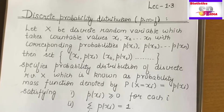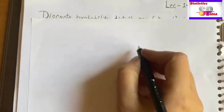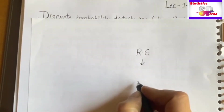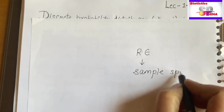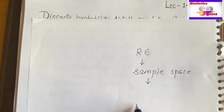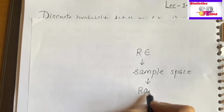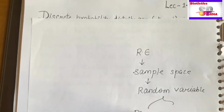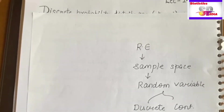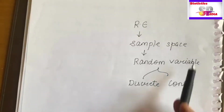Hello students. Today's lecture is all about the discrete probability distribution. In the previous lectures we discussed about a random experiment — when you perform a random experiment, it leads to the sample space. From the nature of the sample space, whether numerical or non-numerical, we introduced the concept of the random variable, and then discussed whether the random variable is of discrete or continuous nature.